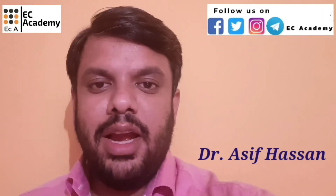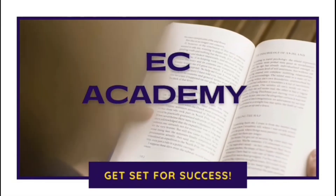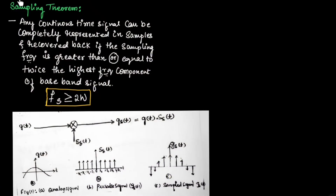Hello friends, welcome to ESA Academy. In this lecture, let us understand the sampling process. First, let us understand the sampling theorem. Sampling theorem states that any continuous time signal can be completely represented in terms of samples and recovered back if the sampling frequency is greater than or equal to twice the highest frequency component of the baseband signal.